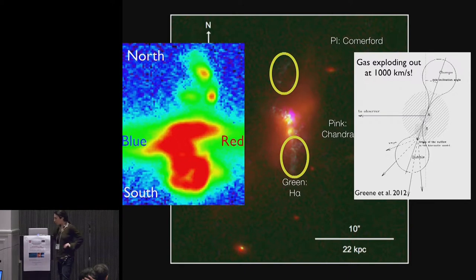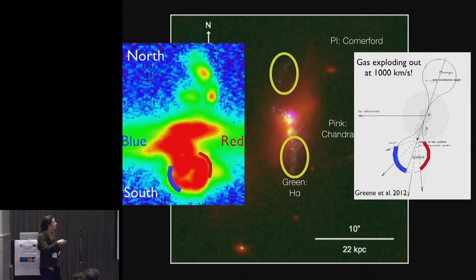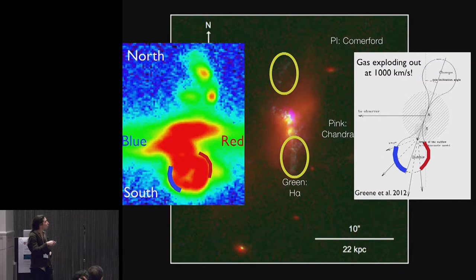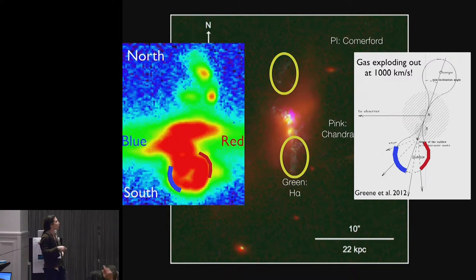And so we're seeing both approaching and receding gas moving at about a thousand kilometers per second, and so we're able to determine that a few percent of the bolometric luminosity of this accreting black hole is going into driving giant bubbles.